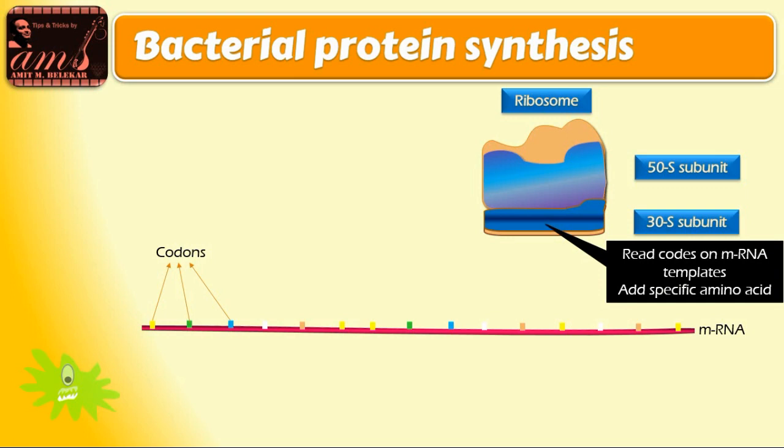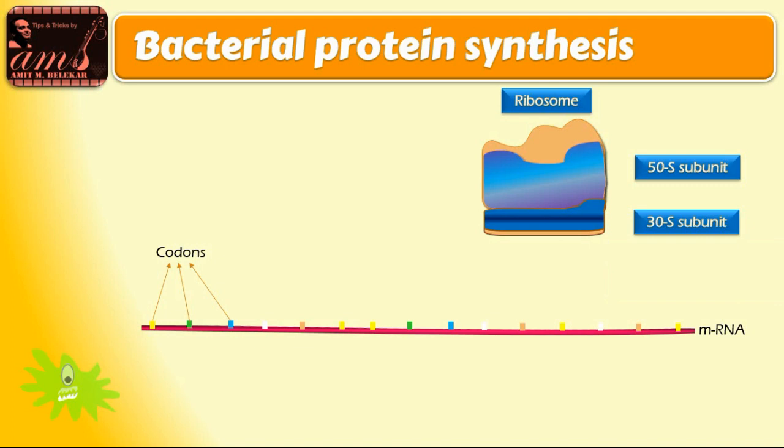It is responsible for initiation of the process or initial tRNA and ribosome complex formation. 50S subunit is having three sites. First is A site which is called acceptor site which accepts the specific tRNA amino acid complex as per codon read by 30S subunit.